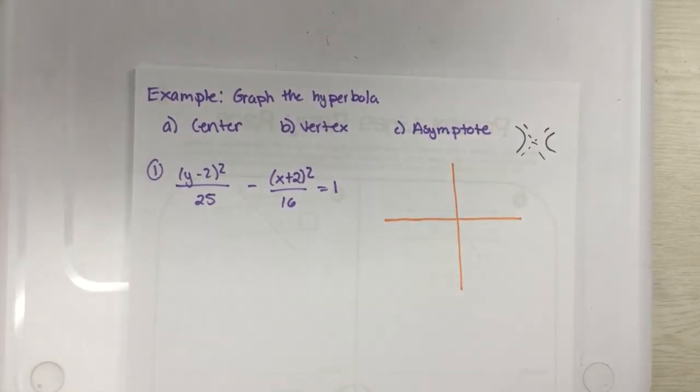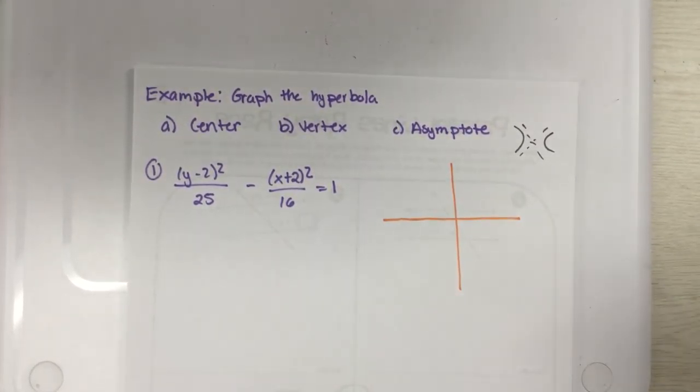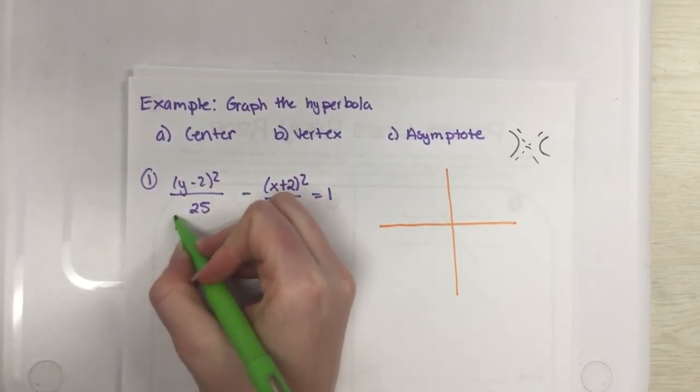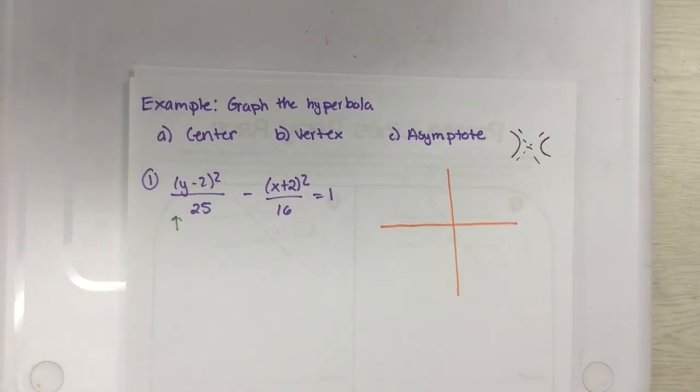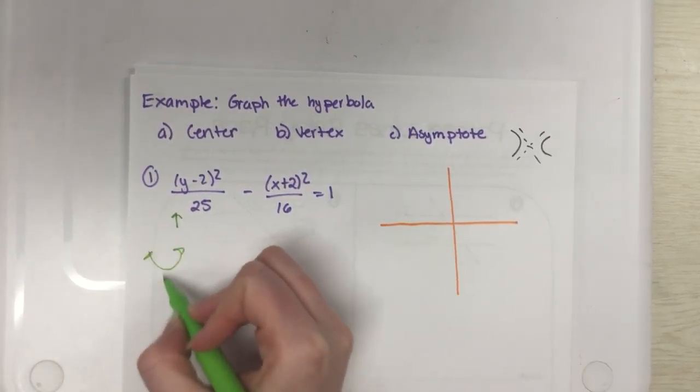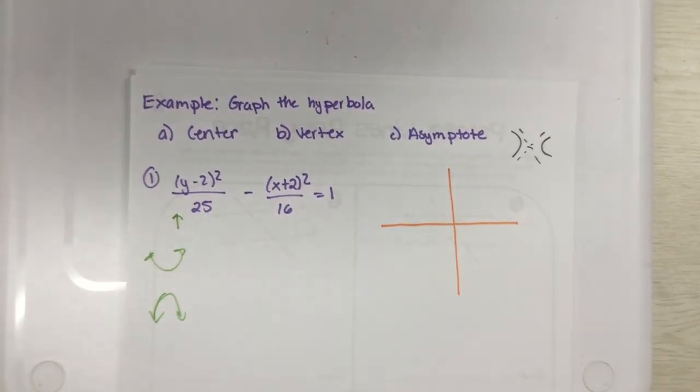What you're going to do right away is you're going to hit a button off to the side and it looks something like this. Just click that button and it will say give me your center and you'll plot the center using that tool, give me a vertex and you'll plot a vertex, give me an asymptote and it'll already be graphed for you.